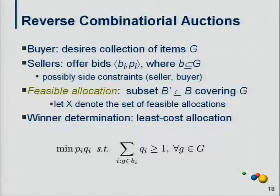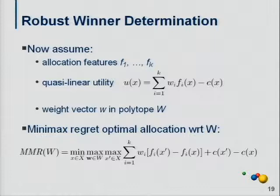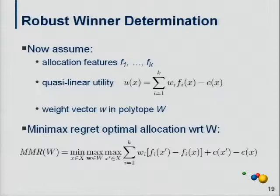As we saw earlier, purchasers generally have preferences for non-price features — number of winners, geographical diversity of suppliers, and so on. We'll assume a quasi-linear utility function: linear utility over outcomes less the cost of the allocation. We have ways of generalizing this for non-linear features and utility. We're going to assume the user has quasi-linear utility, but we don't know the weights — all we know is that the weight vector lies in some polytope W. We write out the same minimax regret equation, looking at the difference between the weights multiplied by the adversary's features less our features, and the difference between costs.